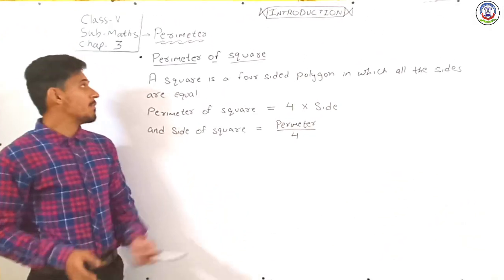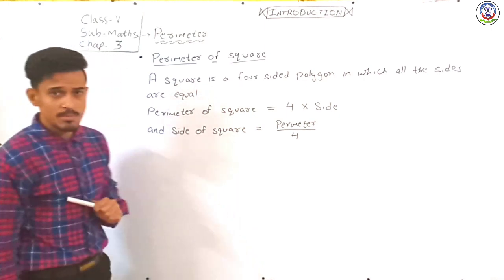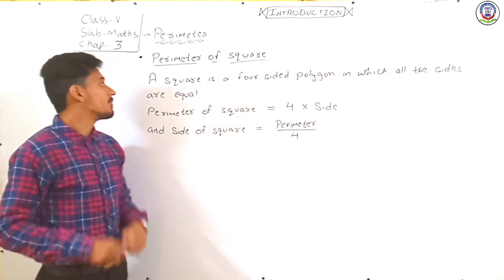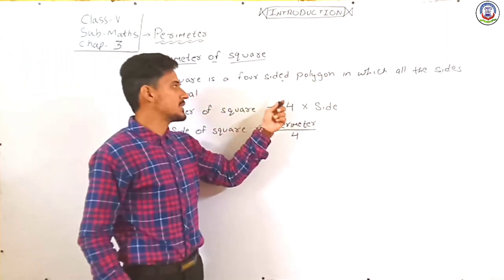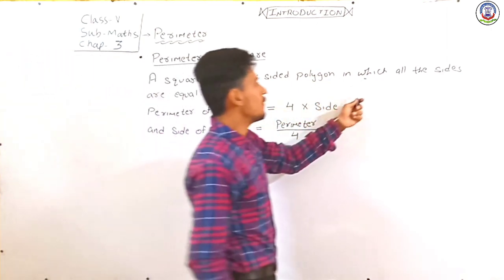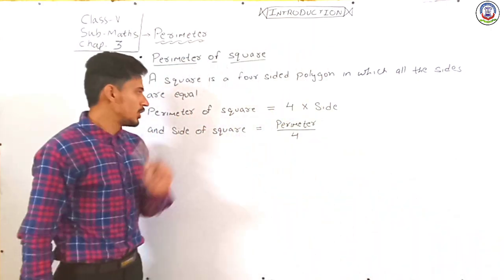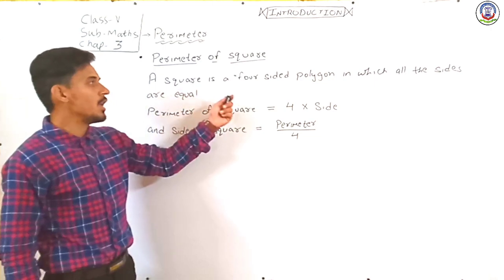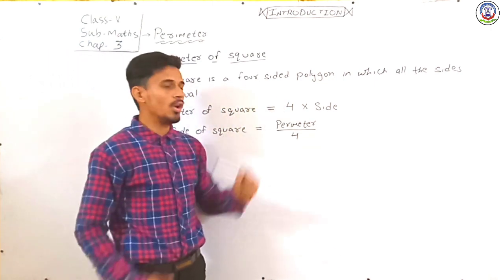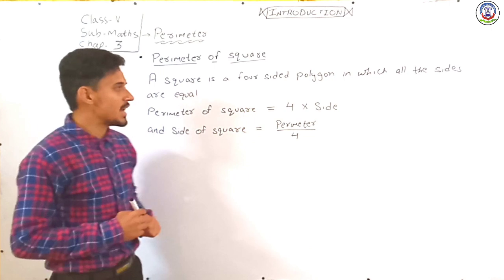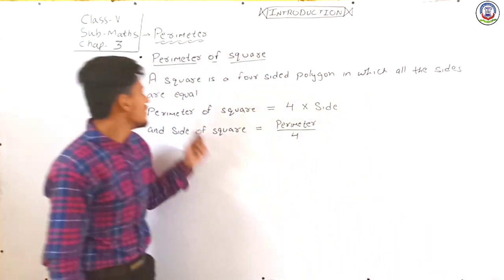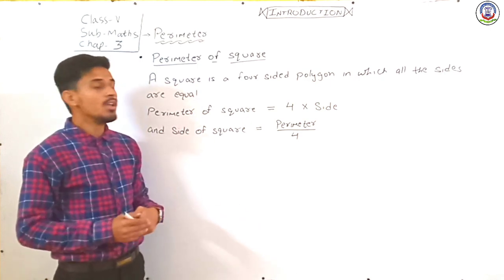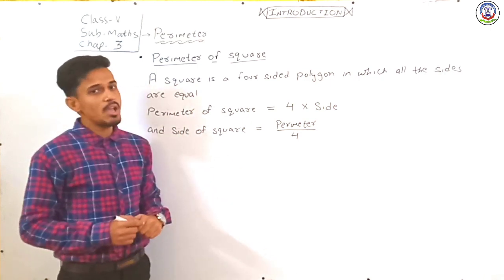Now we learn about the perimeter of a square. A square is a four-sided polygon in which all the sides are equal.